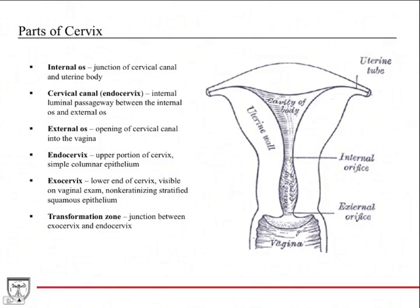The parts of the cervix: first, we have the internal os — 'os' is just another word for opening. It's the junction of the cervical canal and the uterine body. The cervical canal is this luminal passageway between the internal os and the external os. The external os is the opening of the cervical canal into the vagina. So it's like a tunnel: internal os, cervical canal, then external os into the vagina.